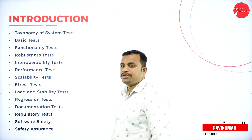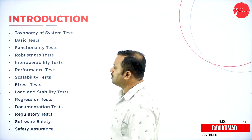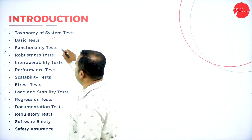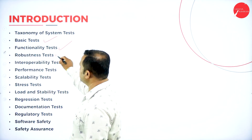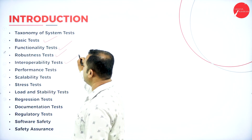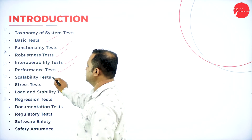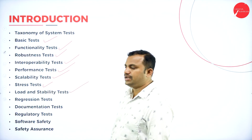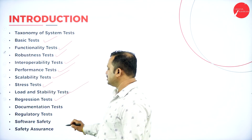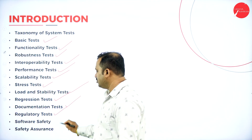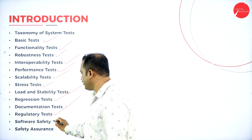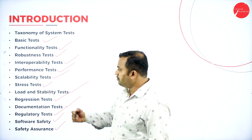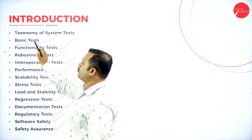The taxonomy of the system testing includes the basic type of tests: the functionality test, robustness test, interoperability test, performance test, scalability test, stress test, load and stability test, regression test, documentation test, and regulatory test. Under regulatory test, we have software safety and software assurance. All these are different types of tests.